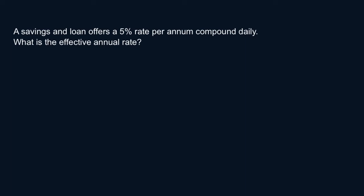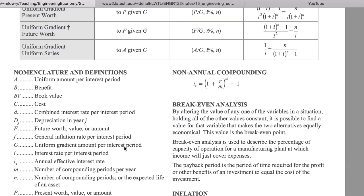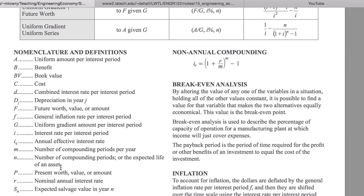So here we go straight to the table to find the formula for non-annual compounding. This is the formula right here: IE equals 1 plus R over M to the power M minus 1. R is your nominal annual interest rate, and M is the number of compounding periods per year.